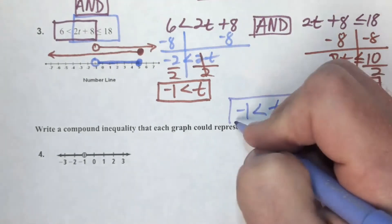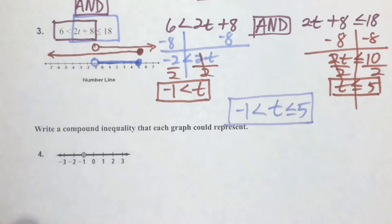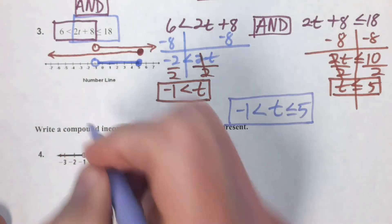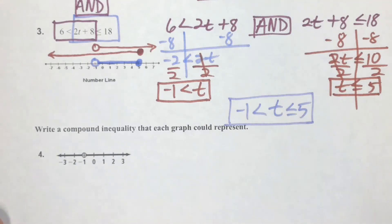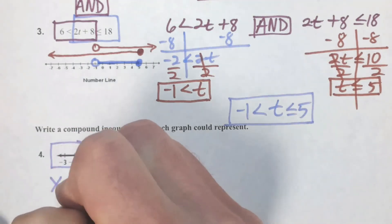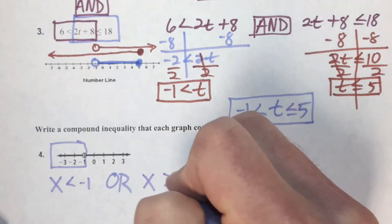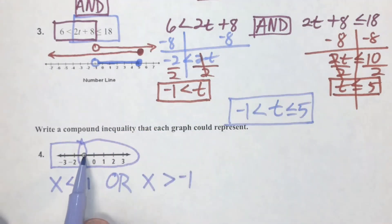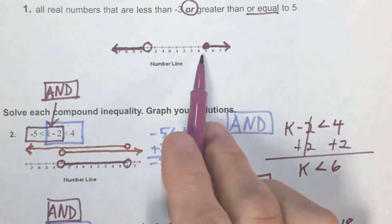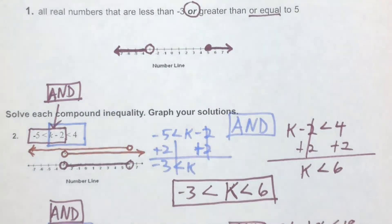Problem 4: write a compound inequality from the graph. You might recognize it as x not equal to negative one, but using OR: x less than negative one OR x greater than negative one — since the left shaded region is all x's less than negative one and the right shaded region is all x's greater than negative one. In review: AND requires both conditions to be met; OR requires only one condition to include numbers in the solution set.